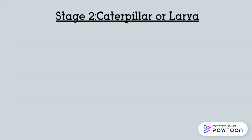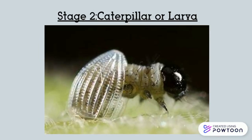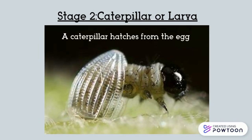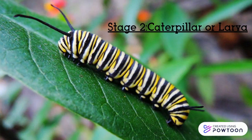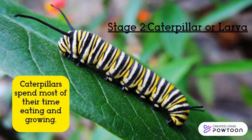Step two in the life cycle of a butterfly is the caterpillar or larva stage. In the picture, you can see a caterpillar hatching from an egg. This caterpillar is sitting on a leaf. During stage two, caterpillars also spend most of their time eating and growing.